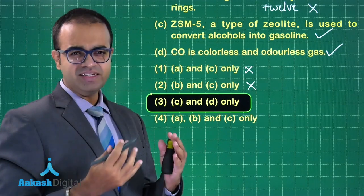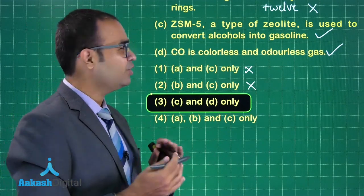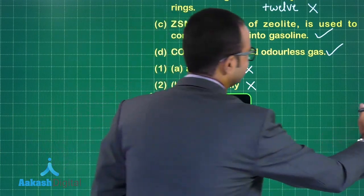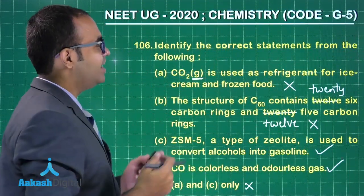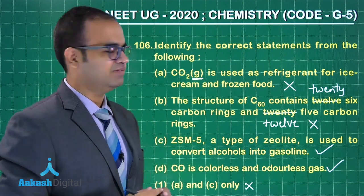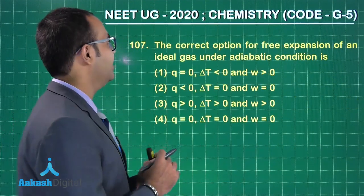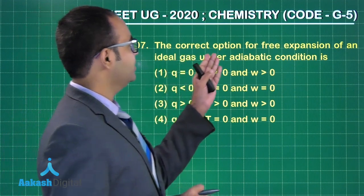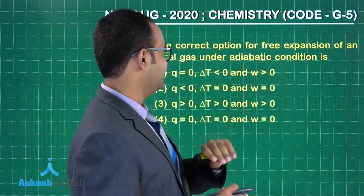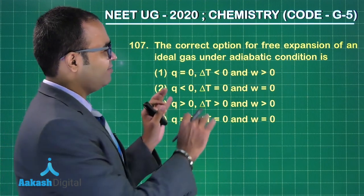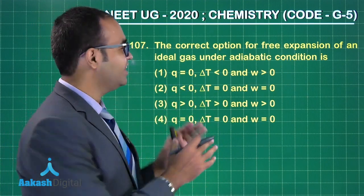Let us move on to the next question, question number 107. The correct option for free expansion of an ideal gas under adiabatic condition is... So let us first do the analysis of the question, and then look at the options. When I am saying free expansion, what do I know about free expansion? Work done will be zero, right?